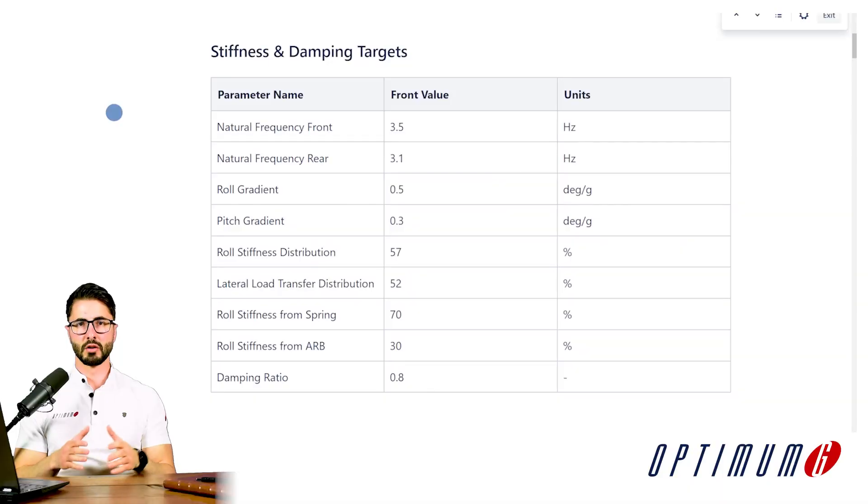How do we define what natural frequency we want? It depends on several factors. The first one is that each type of car will have a range that you typically see for natural frequencies — this is a good reference and a very good benchmark to start designing your first car. If you have a higher natural frequency, this means you will have less movement, better platform control, and faster load transfer, which is good for high-level race cars as well as pro drivers.